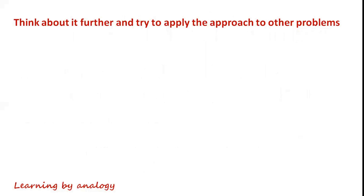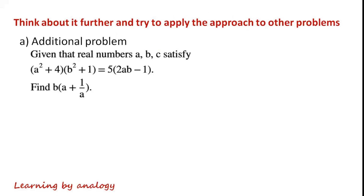Think about the thought process for the previous question further and try to apply the approach to other problems such as this one: given that real numbers a, b, c satisfy a squared plus 4b squared plus 1 equals 5(2ab minus 1), find b times (a plus 1 over a).